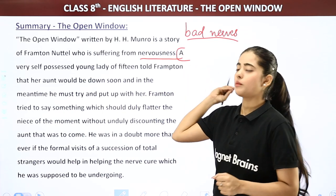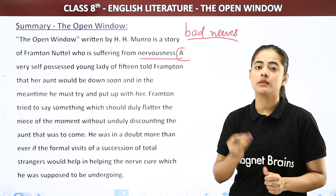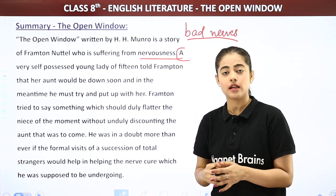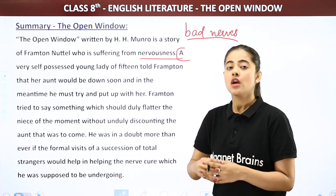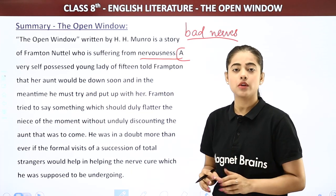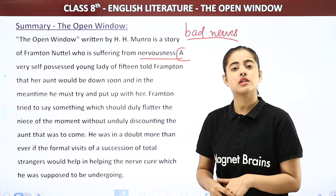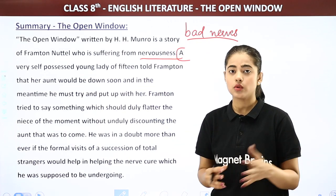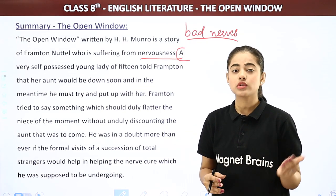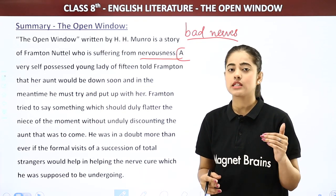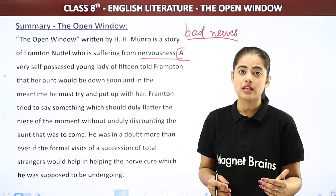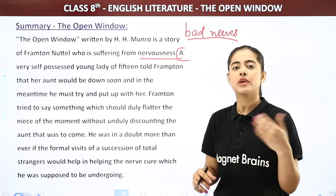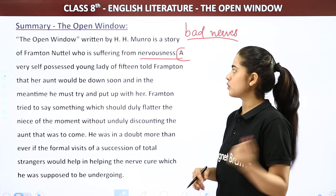The story begins from here, where Frampton has gone to Mrs. Sappleton's house — she is one of the inhabitants of that place, and his sister had given him a letter of introduction for her. So now he goes to Mrs. Sappleton's house, and there her niece, that is Vera, begins this chapter.